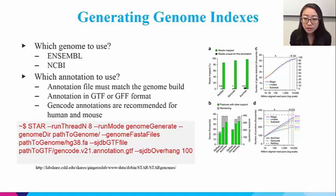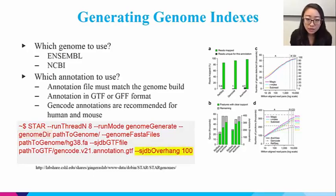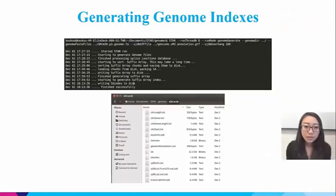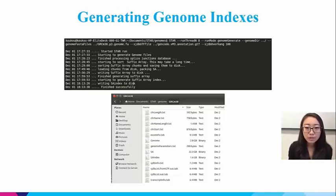Here is the command for generating genome indexes using STAR. The parameters are self-explanatory. The GenomeDir parameter specifies where STAR places the generated genome indices. The last parameter, SJDBoverhang, specifies the length of the genomic sequence around an annotated junction for construction of the splice junction database. It corresponds to the read length of your RNA-seq data, and a value of 100 will usually work for most cases. It only takes about 30 to 40 minutes to index the entire mouse genome on a Linux machine with 8 CPU cores and 32 GB memory.